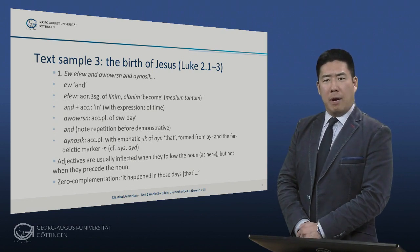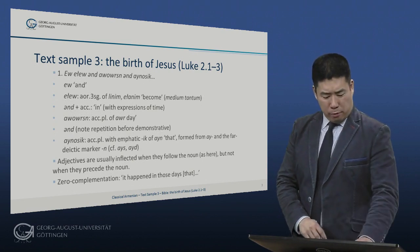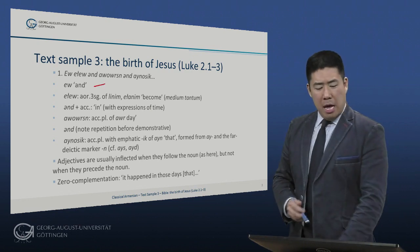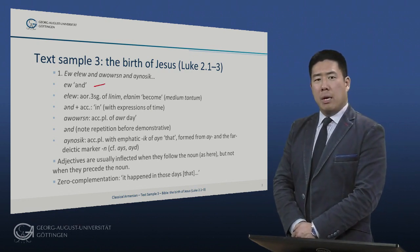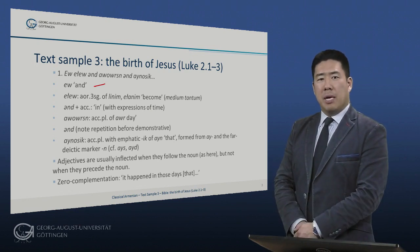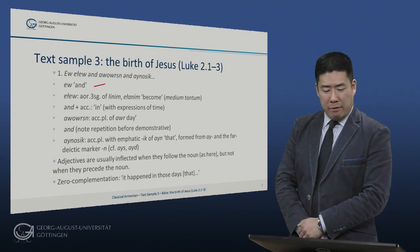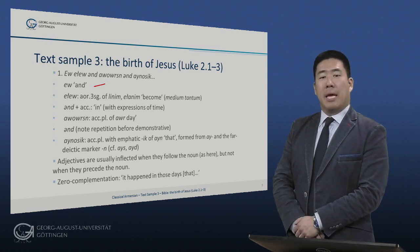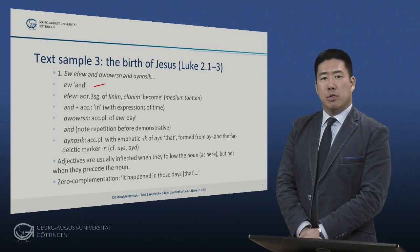There's a lot to unpack here. El is 'and,' probably the first word you should learn. Eleo is aorist third singular, highly irregular, of linim, later elanim, meaning 'become.' This is a medium tantum verb — there are no active forms. So, 'and it became,' 'it happened,' 'it came to pass.'